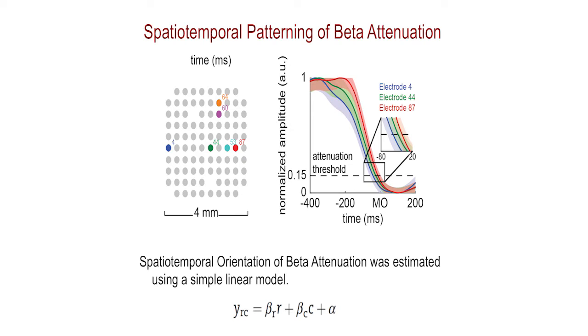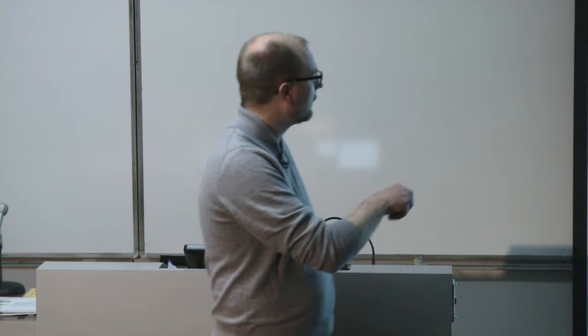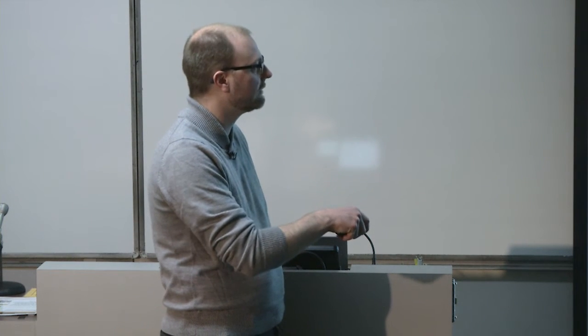In this cartoon I'm showing for electrode 4, electrode 44 in the middle, and electrode 87, the beta attenuation with respect to when movement begins on those electrodes. What you can see is it appears that the blue one starts first, then the green one takes place, and finally the red one after that. So we're seeing this kind of spatial temporal organization — neurons over here doing something, then neurons over here doing something, then neurons over here doing something.